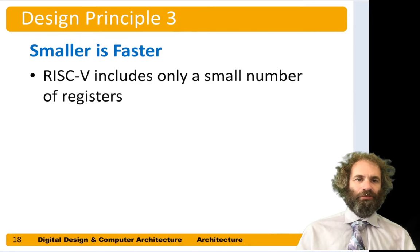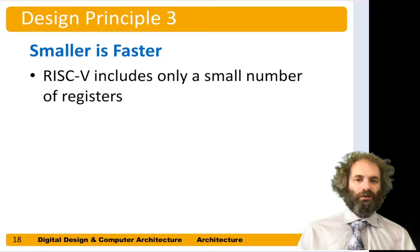This leads us to design principle 3: smaller is faster. RISC-V only has a small number of registers — 32 of them — and computer architects pick that size of the register file very carefully. The clock period of the system could be limited by many different things: the ALU speed, the time to fetch an instruction, or access data memory, or the register file. We choose a small enough register file so that it's not the limiting factor in the computer, and doesn't prevent us from building fast computers.